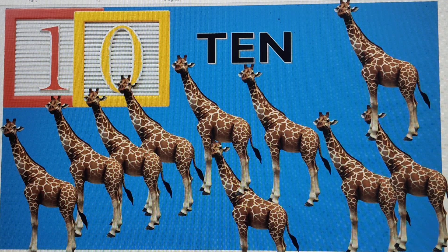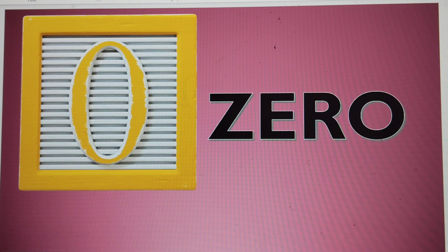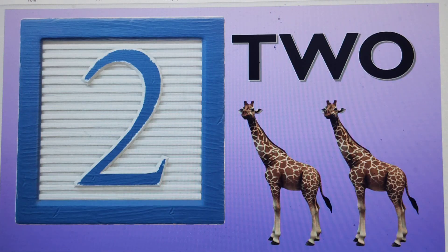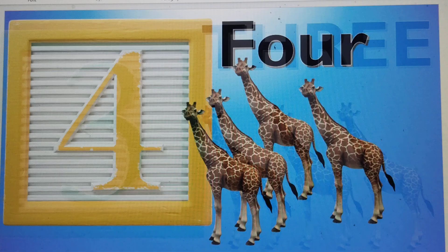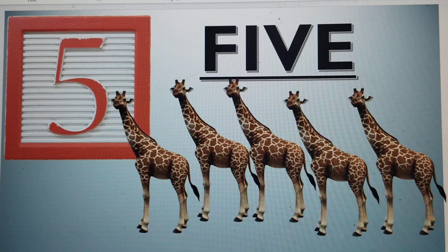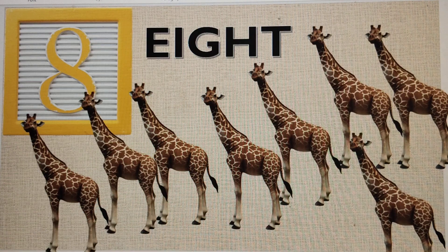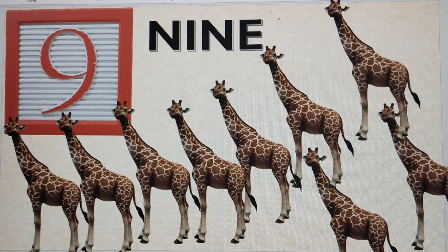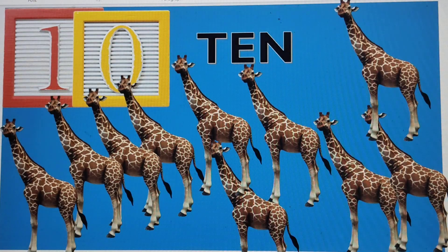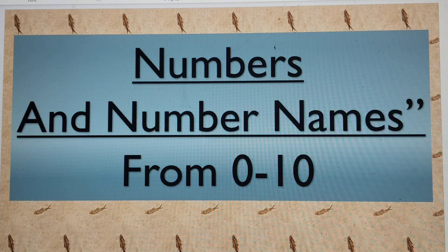We have done numbers from zero to ten. And my video ends here. Let's recap: this was number zero — the smallest number. This is number one, number two, number three, number four, number five, number six, number seven, number eight, number nine, and this is number ten. I hope you will like this video. Don't forget to share, subscribe, and like it. Thank you for watching!